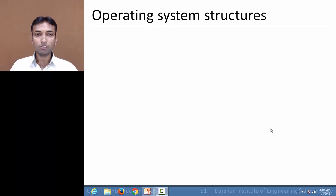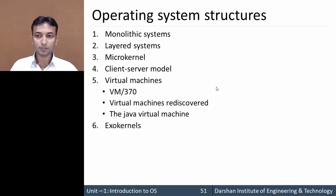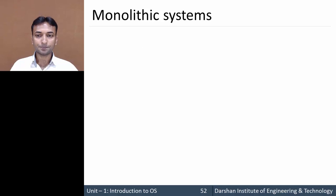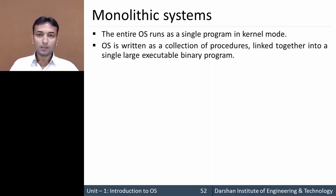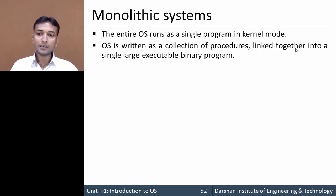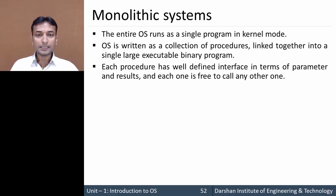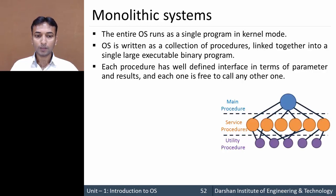In this video we will learn about operating system structures. The first structure is the monolithic system. In this system, the entire operating system runs as a single program in kernel mode. It is written as a collection of procedures linked together into a single large executable binary program, and each procedure has a well-defined interface in terms of parameters and results, and each one is free to call any other procedure.